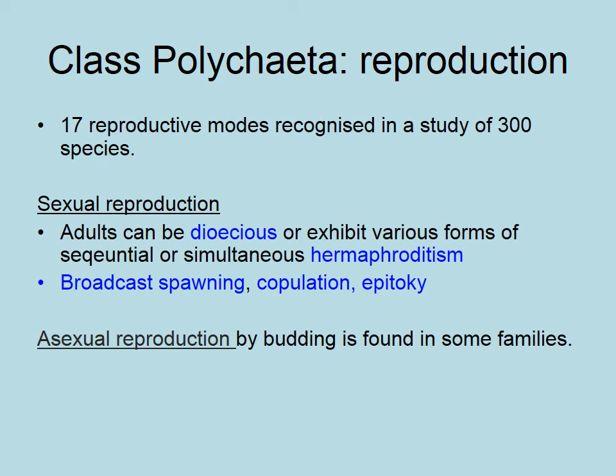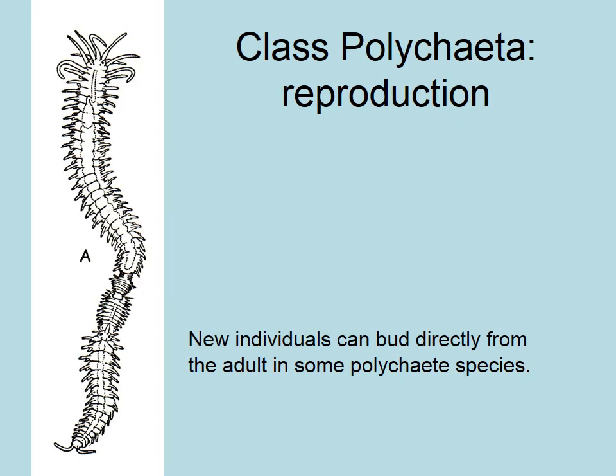Sexual reproduction is generally broadcast spawning. They can also do copulation or something called epitoky, and some of them show budding. Here is epitoky — and hopefully we can see some of these in lab — where you can see new budding individuals growing right off the growth zone at the rear end of the body.